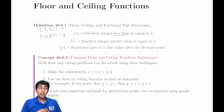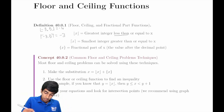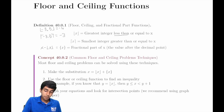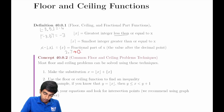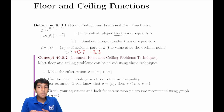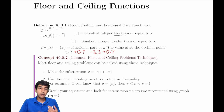The fractional part is defined as x minus the floor of x. For example, the fractional part of 2.7 is just 0.7. Now for negative 3.3, be careful — the floor of negative 3.3 is negative 4, so negative 3.3 minus negative 4 equals 0.7. So negative 3.3 has a fractional part of 0.7. Be careful with negative values.